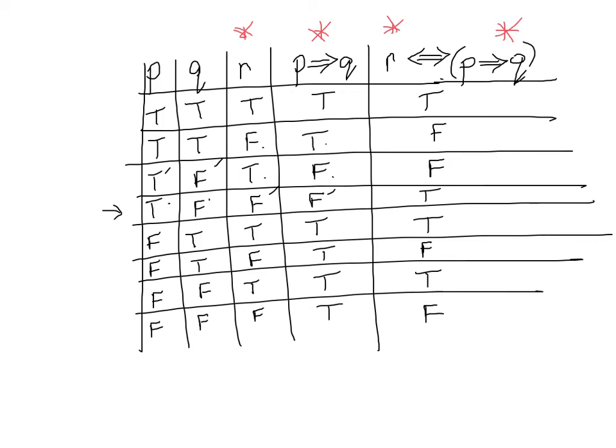So for the arrow one way, they're all true except TF. And for the arrow both ways, they're true when they're the same.